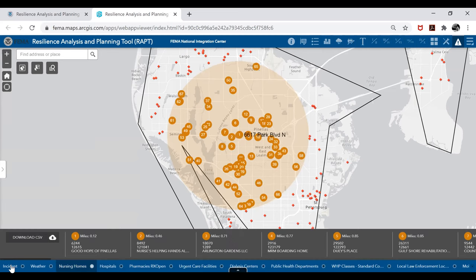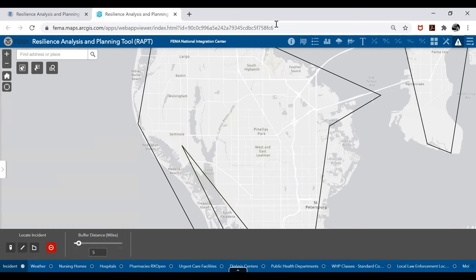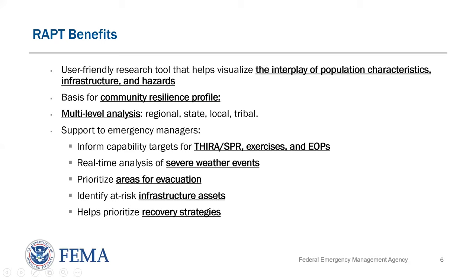I really think all these tools and indices are user-friendly. RAPT can be used for a community resilience profile, to support emergency managers whether through the THIRA-SPR or different exercises, and to prioritize areas for evacuation. Although there are a lot of similarities between the tools, each one is very unique and diverse, and they all exist to be complementary to each other. Together as a whole they can really help emergency managers have a better understanding of their communities. With that I'll turn it back over to NAPSIG.